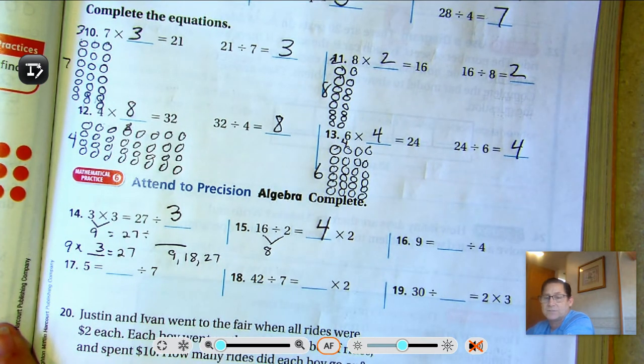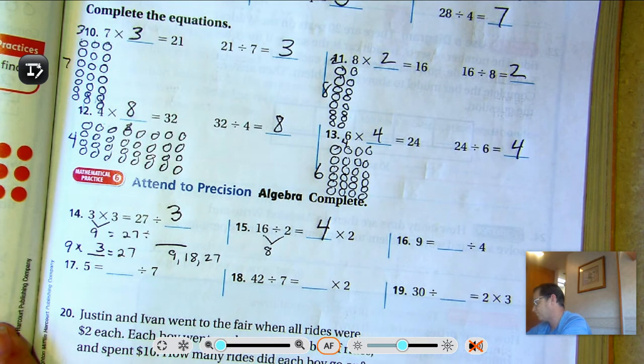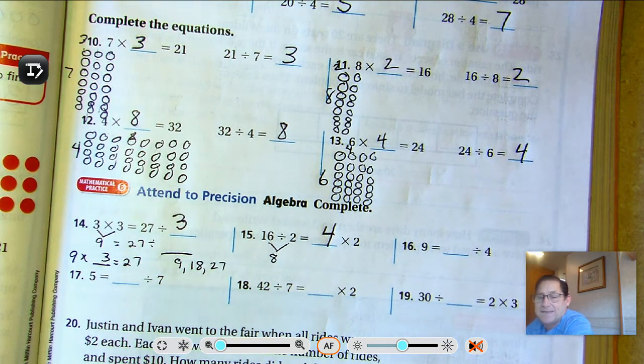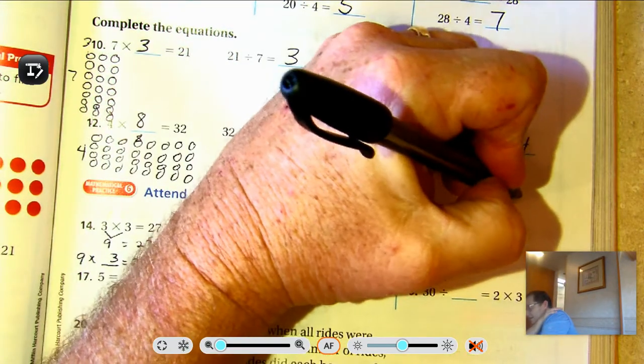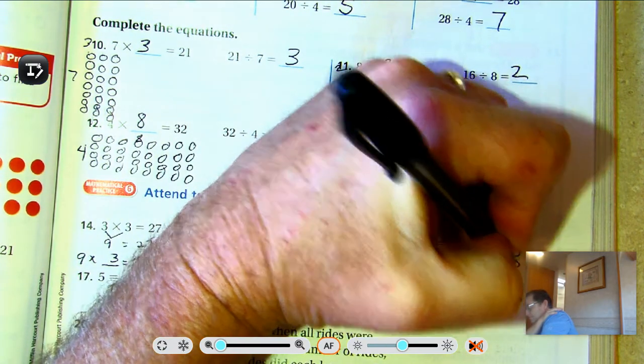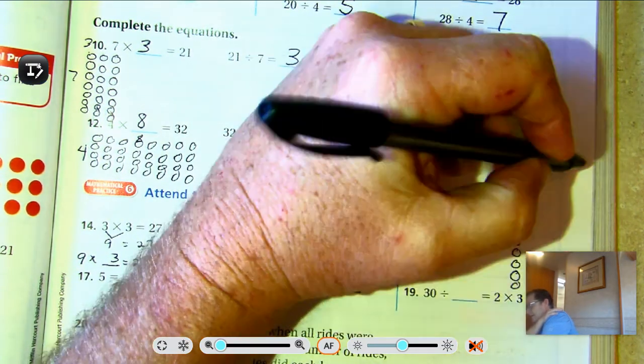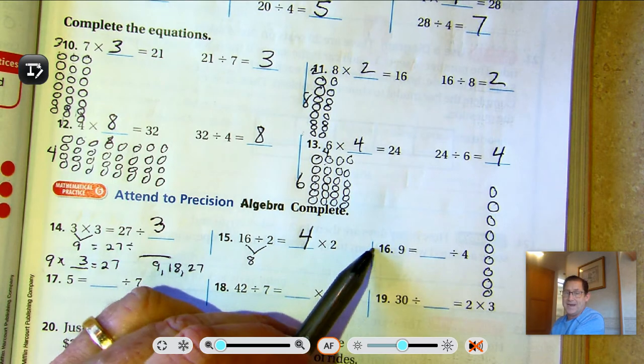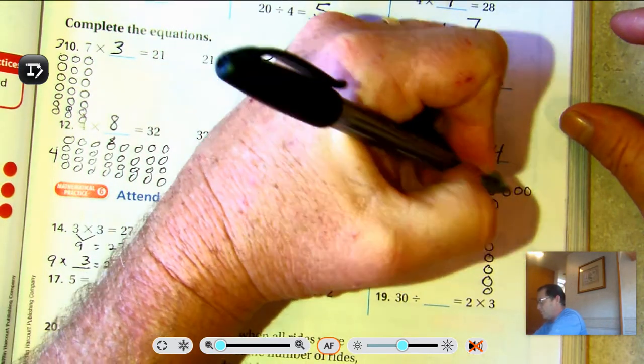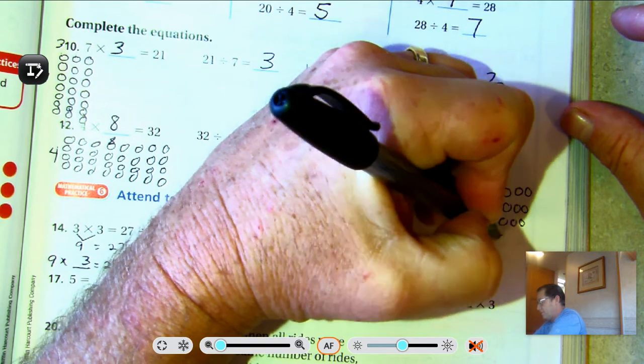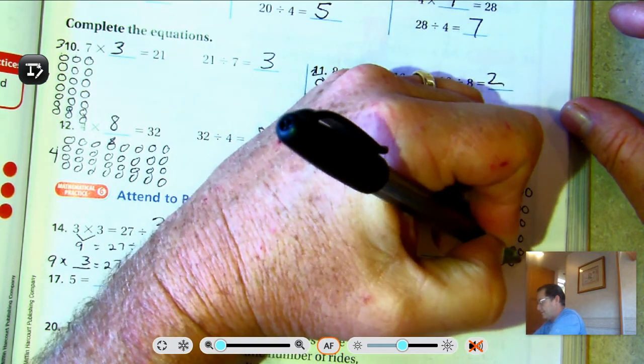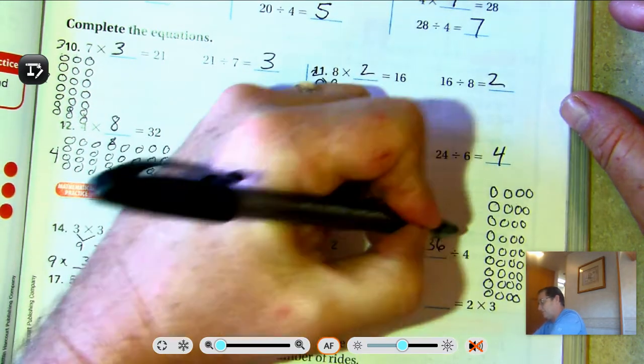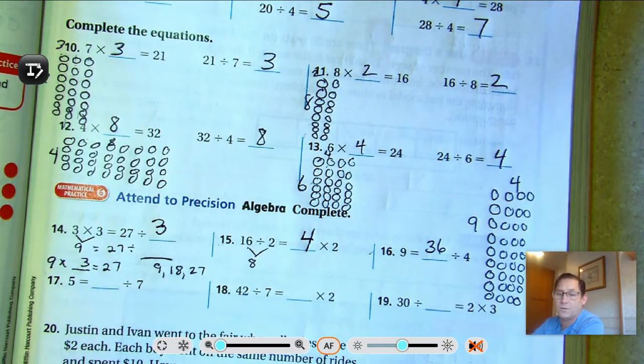9 equals some number divided by 4. That's the same thing as saying 9 times 4. So if we had 9 rows and our total, if I divide by 4, it's saying I'm going to get 9. So let's put 4 in each row. Counting: 4, 8, 12, 16, 20, 24, 28, 32, 36. So 36 divided by 4 is 9.